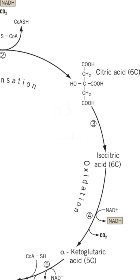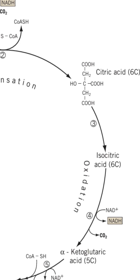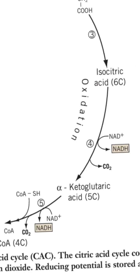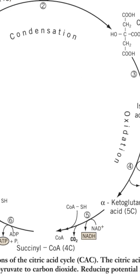Step 3: Isocitrate decarboxylation and oxidation. In the third step, isocitrate is oxidized to form alpha-ketoglutarate in the presence of isocitrate dehydrogenase enzyme. As a result of this step, carbon dioxide is released through decarboxylation and NADH molecules are formed.